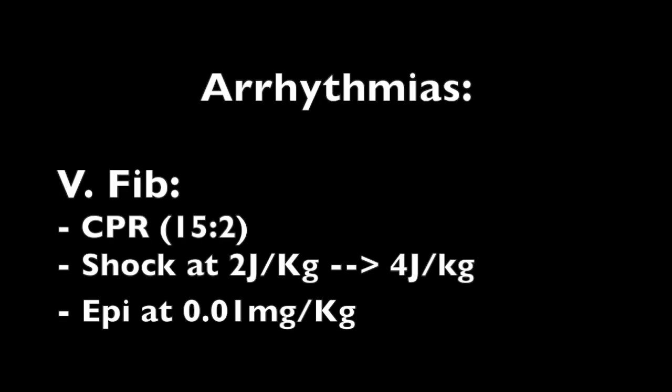The next rhythm is VF/pulseless VT. Start CPR as soon as you see it. If you have at least two people, the compression-to-respiration ratio is 15 to 2. You're going to want to shock these patients — voltage starts at 2 joules per kg and goes up by 2 thereafter: 4, 6, then 8. The dosing for epinephrine is 0.01 mg per kg, which is different from adults.